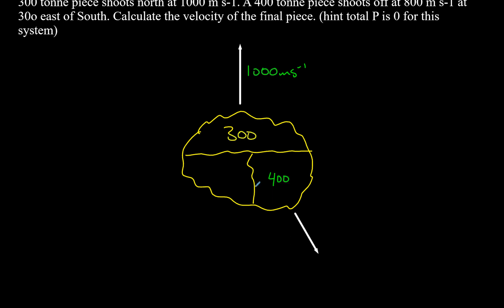First thing is to write down what the mass is. It's going to be 300 tons. We're just going to work within tons, which is okay. As long as we stay within tons, the problem will work out. And we'll write in this velocity here, which is 800 meters per second, 30 degrees to the east of south.